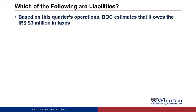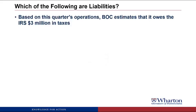Based on this quarter's operations, BOC estimates that it owes the IRS $3 million in taxes. This is a liability even though it's hard to see where the prior transaction was. Essentially, the government allowed us to operate our business, and in return we're obligated to pay taxes. We estimate we owe $3 million in taxes, and that's our reasonably certain number, so we book a liability called income tax payable for $3 million.